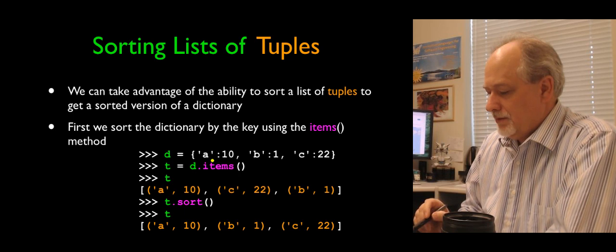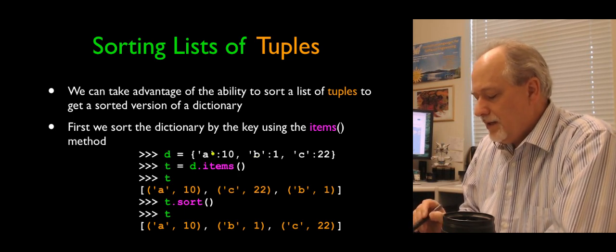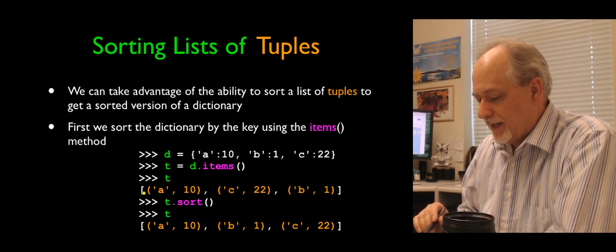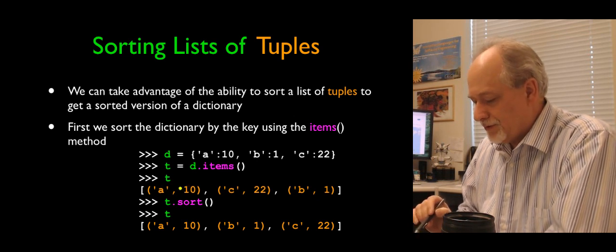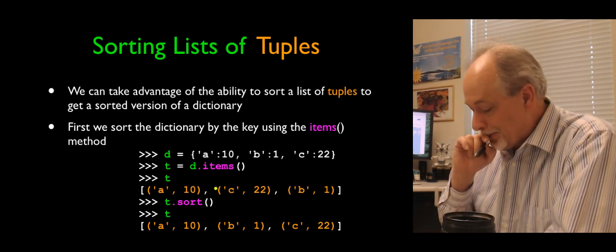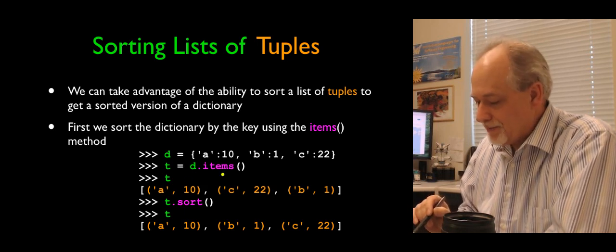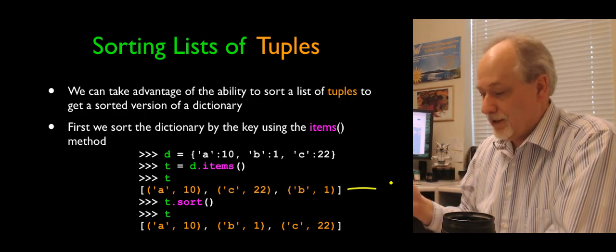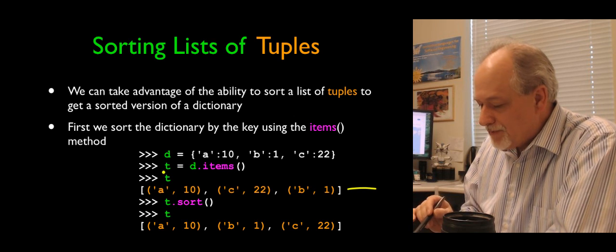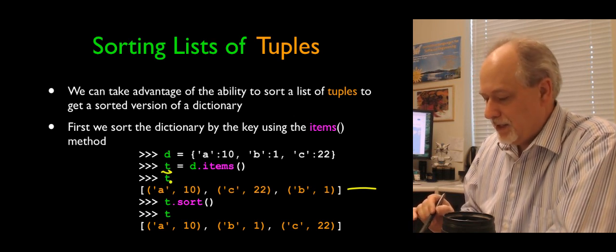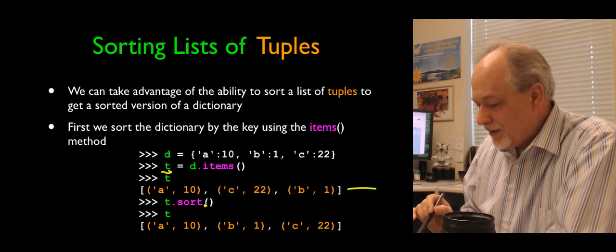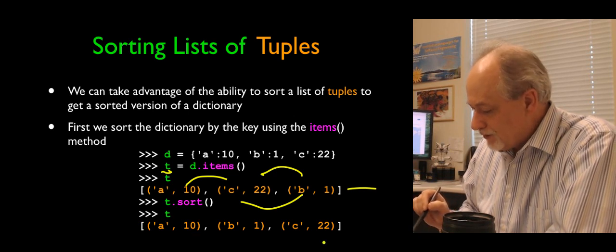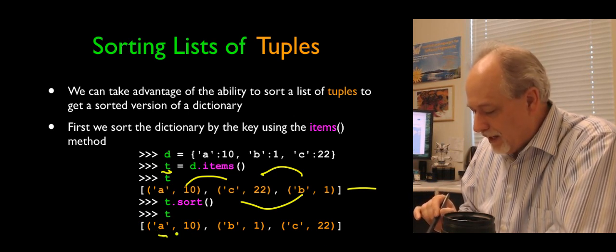So here is A, B, and C. A maps to 10, B maps to 1, C maps to 22. If I look at the items, I get back a list of two tuples, three two tuples. They are not sorted because dictionaries aren't sorted. A maps to 10, C maps to 22, and B maps to 1. The order that these come out in is not something that we can control. But if we put these items into a variable, call it T. T is the list of tuples, basically. And then we tell it to sort. It can do comparisons between all these. And it can sort them. And now they're sorted in key order. A, B, C.